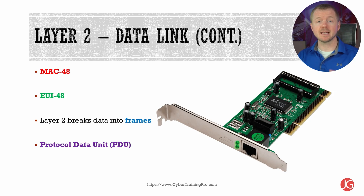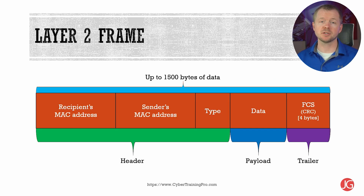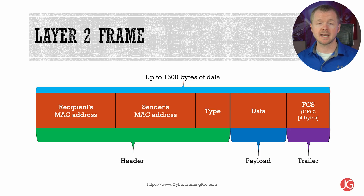Layer two takes the data that's being sent and it breaks it up into frames, which are containers for a chunk of data. Each layer of the OSI model does something similar with the protocol adding data, which we call the PDU or the protocol data unit. Layer two's PDU is frames. On the screen here we have a basic representation of what a layer two frame looks like. We have the recipient's MAC address which is the destination, the sender's MAC address, and the type, which indicates what's encapsulated in that frame — for example, does it contain IPv4 or IPv6 data?